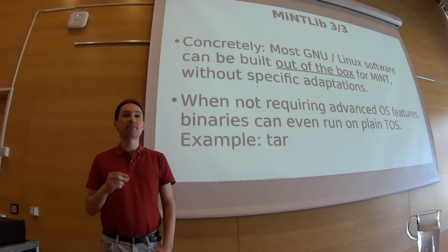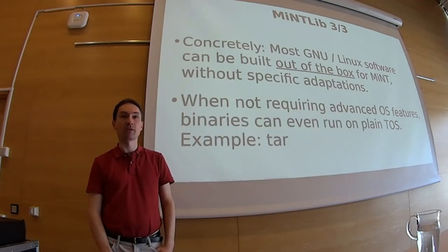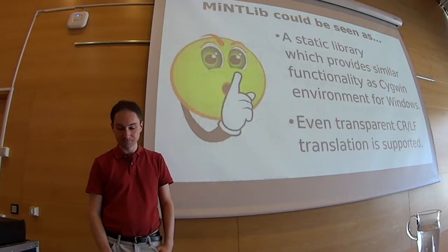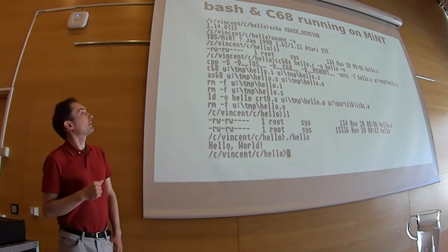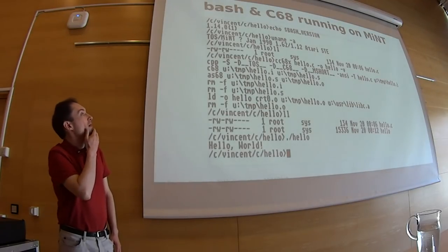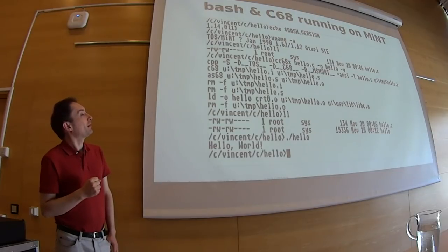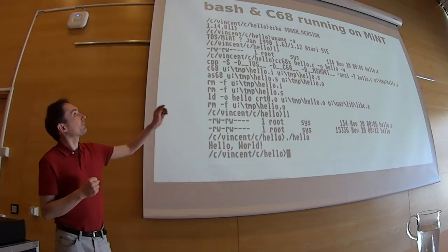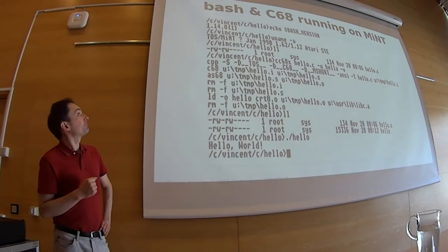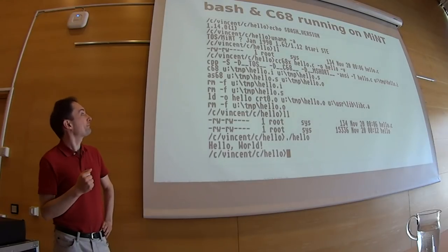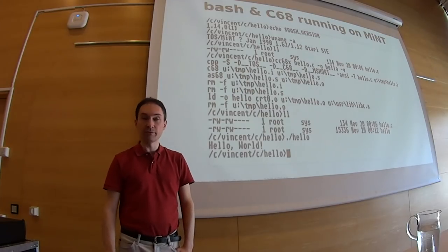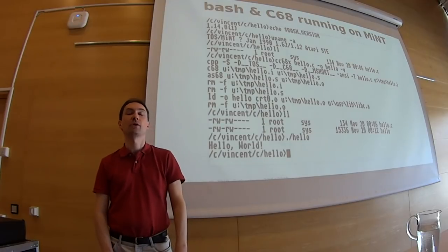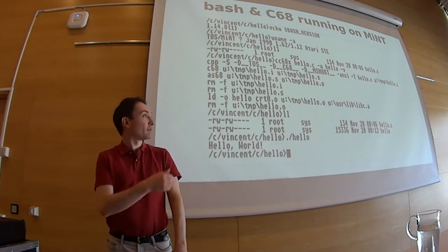And the resulting binaries, if they don't need advanced features, they can run in plain TOS — even without FreeMiNT. Here you can see my old 4-megabyte Atari ST running, maybe in 1995. With Bash, the shell. And I use the C68 compiler to compile a simple hello world. It's a very Unix-like environment. I used it much when I was at school — I used Unix at school, and I used that thing at home.